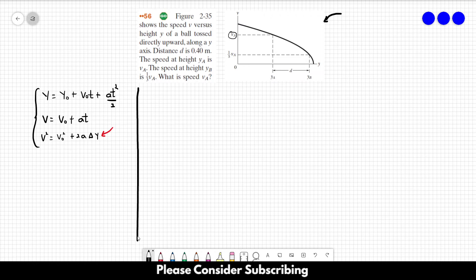Let's see what we have. The final speed is when the position is YB, so the final speed is this one, the initial speed is that one. This is the final position and this is the initial position. Let's remember that A is only the acceleration of gravity.